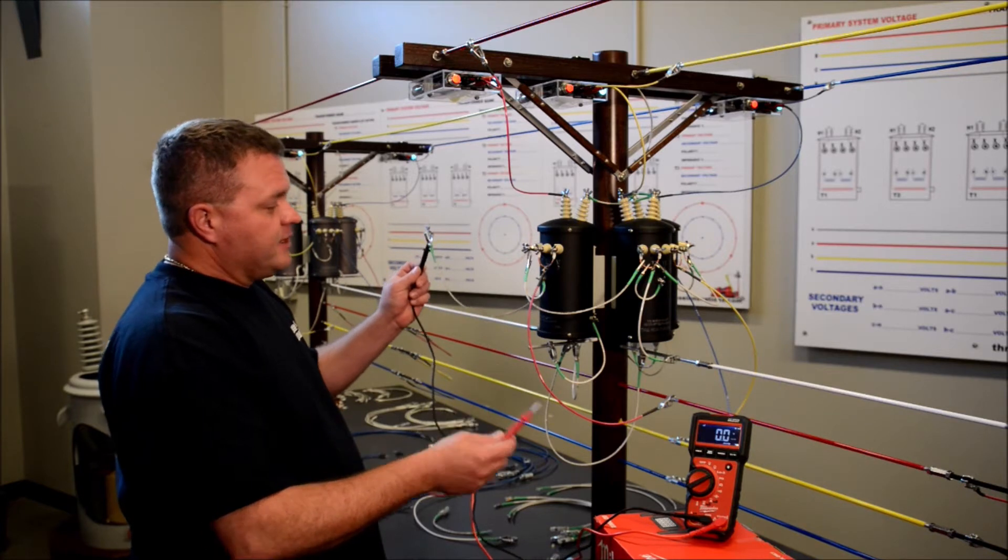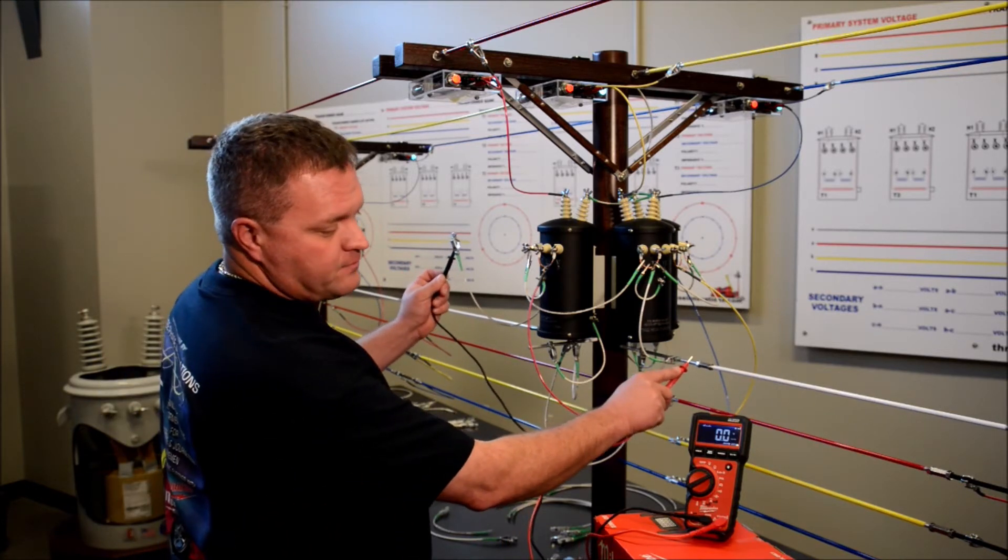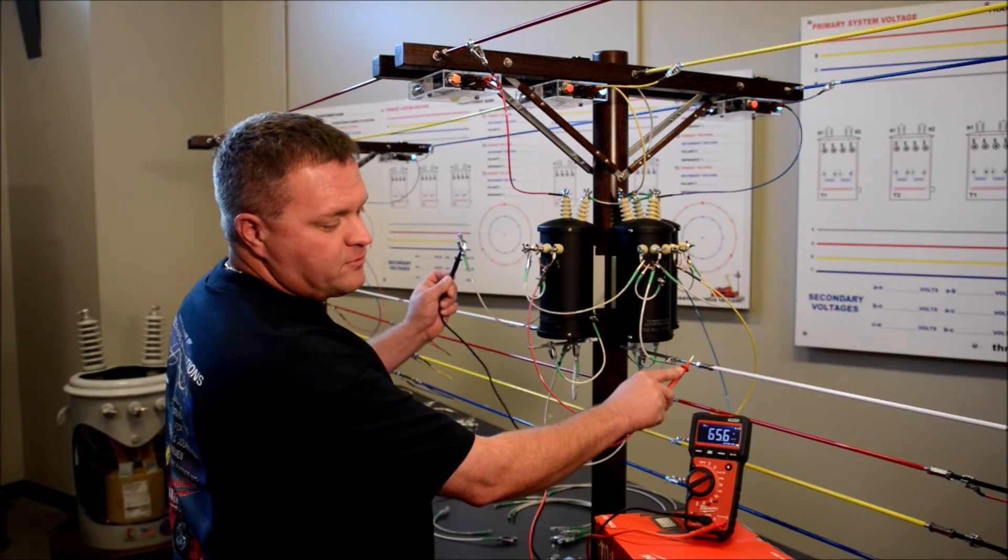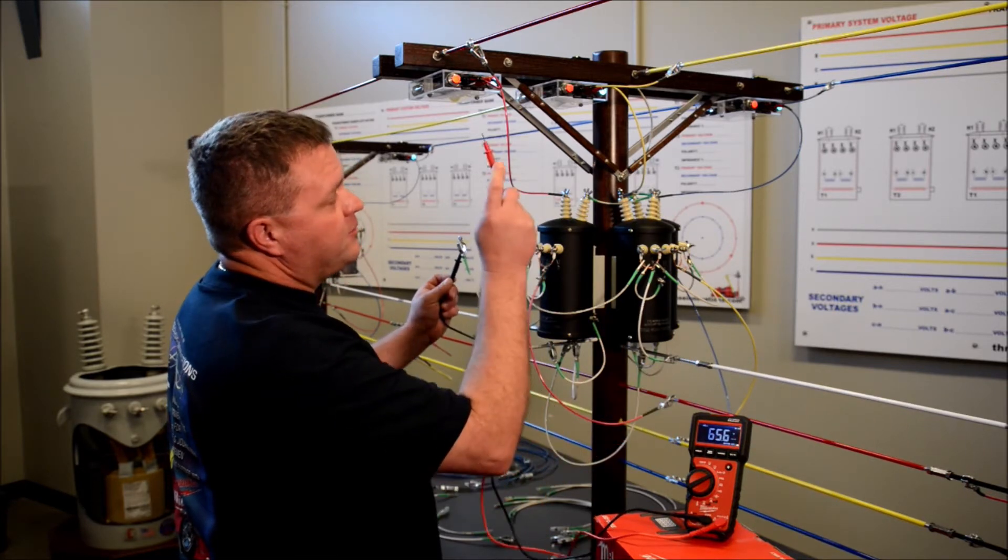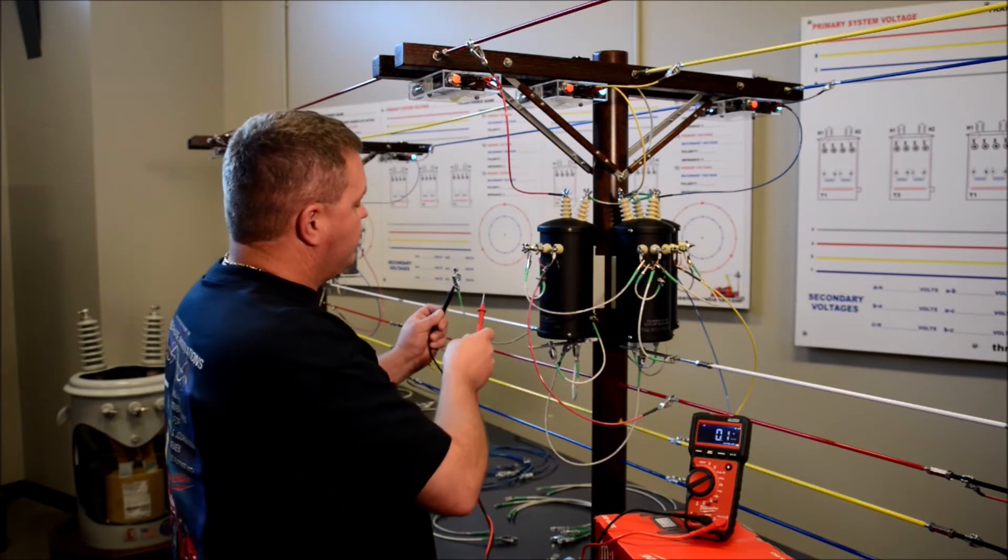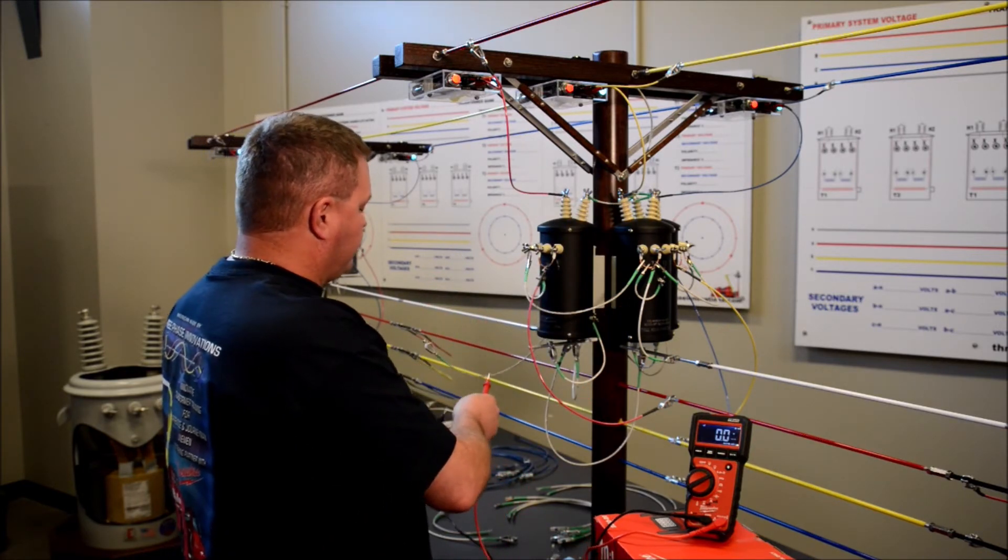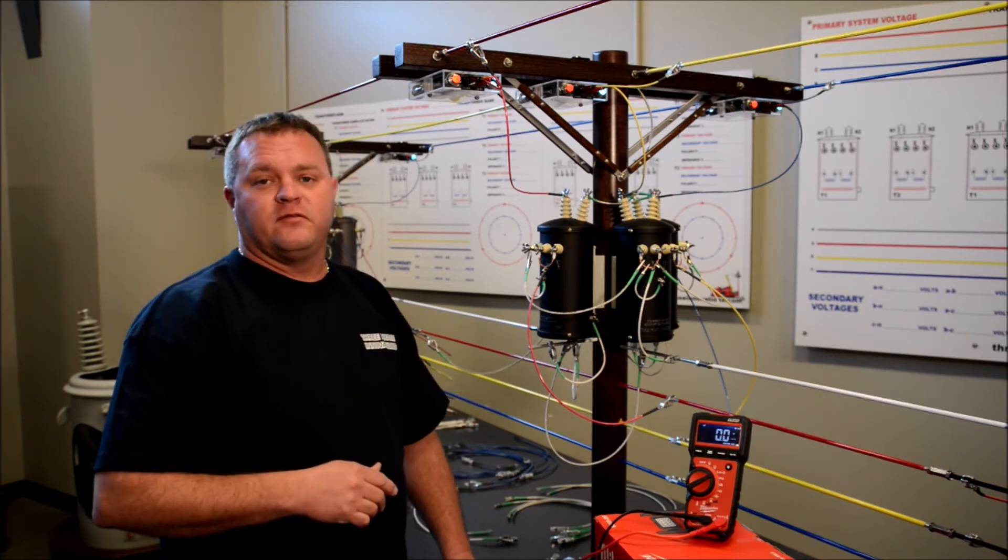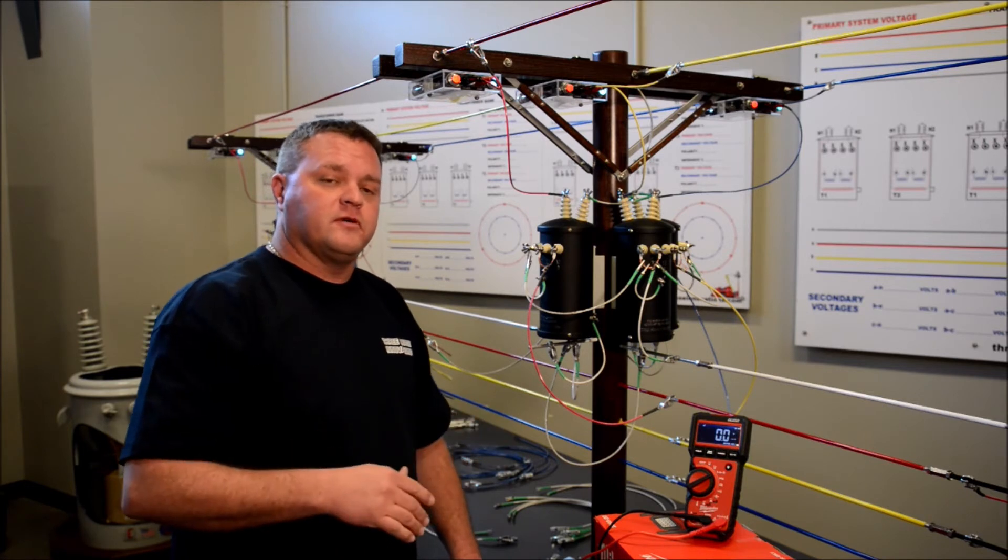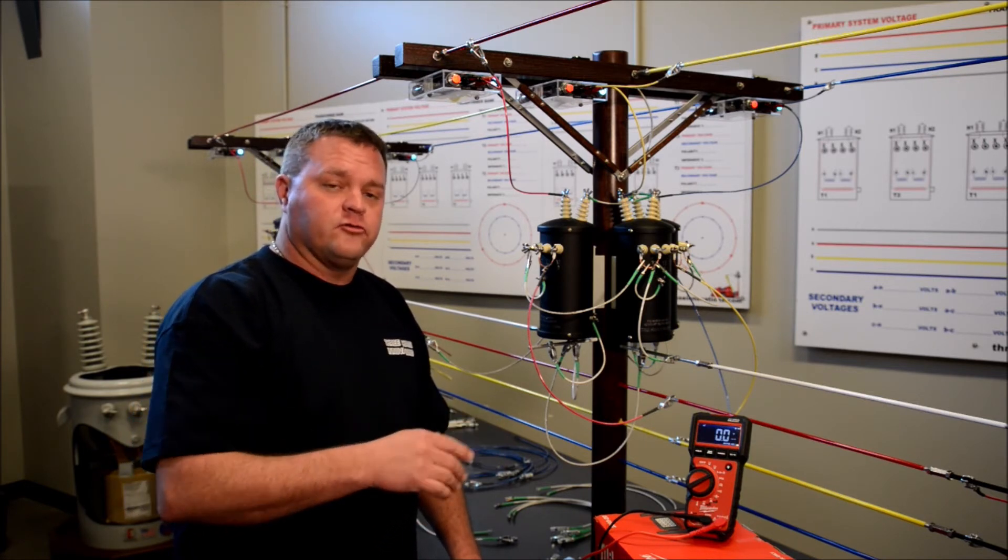Back here I'm going to get my connection on the floating high, take it to ground. We're getting approximately 65 volts. Up here on the primary is 120 phase to ground on each, 208 phase to phase. So that 65 volts is half the primary voltage.